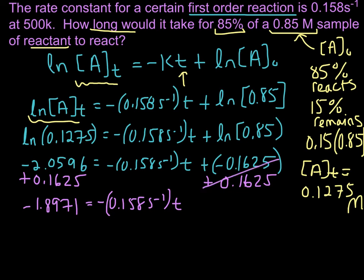Now let's divide by negative 0.158. That's going to get rid of our negative sign, which is good. We divide 1.8971 by 0.158, and we end up with t equals 12.00.